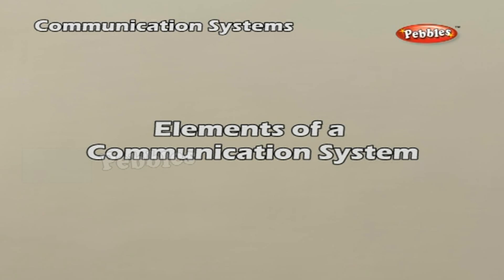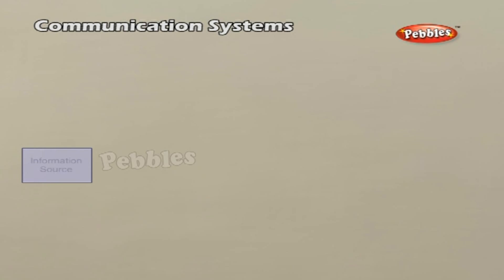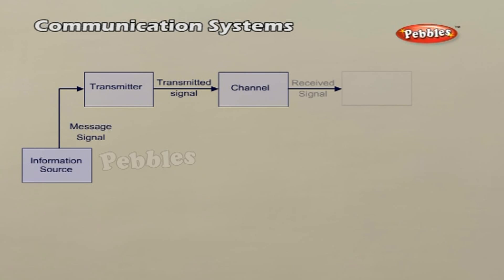Every communication system has three essential elements: Transmitter, medium or channel, and receiver. The block diagram shown in figure depicts the general form of a communication system.